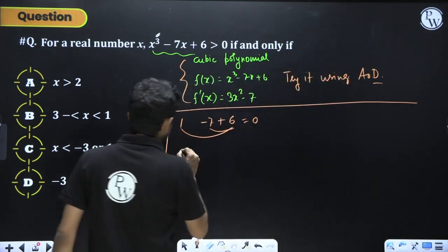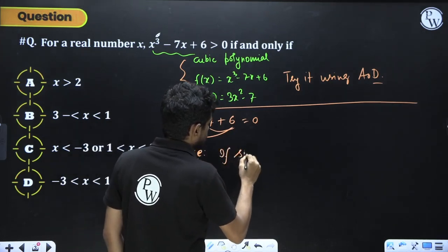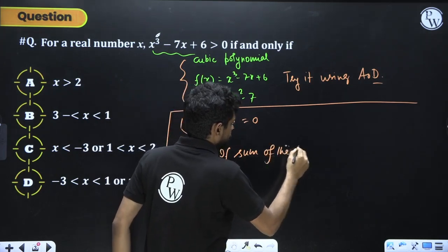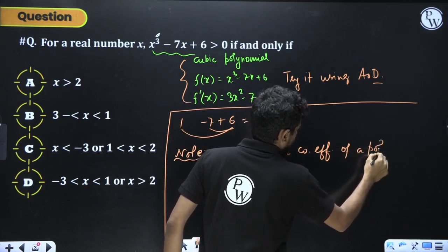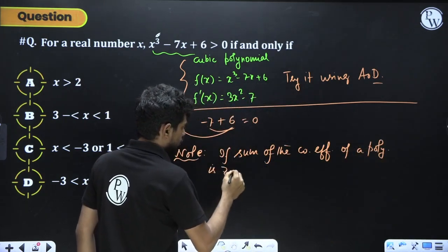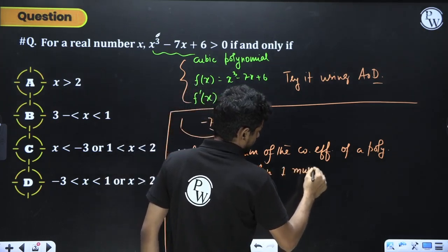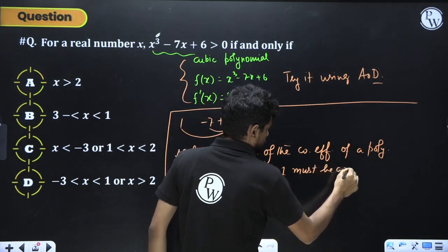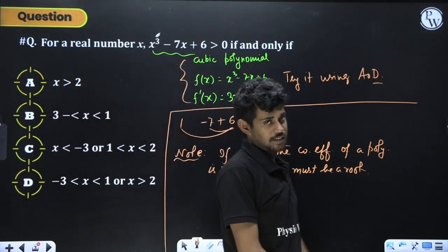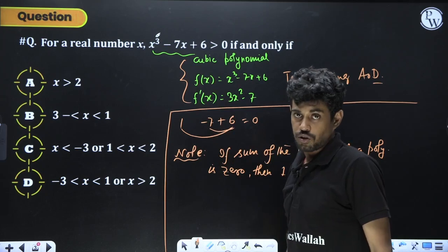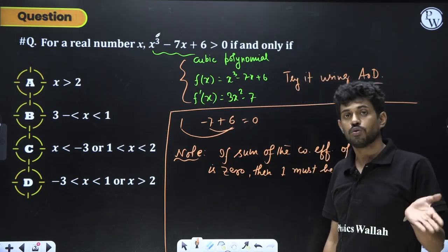Kindly note: if the sum of coefficients of a polynomial is 0, then 1 must be a root. So for x³ - 7x + 6, since the sum of coefficients equals 0, x = 1 is a root. Now I will use the vanishing method to factorize this polynomial.